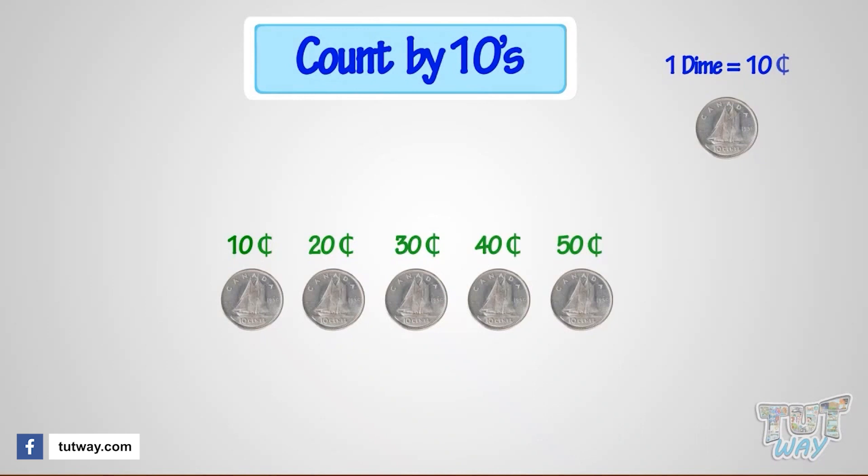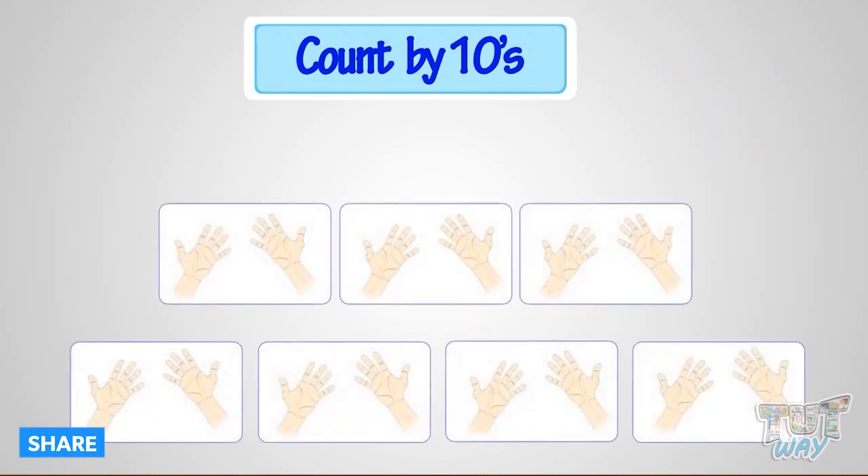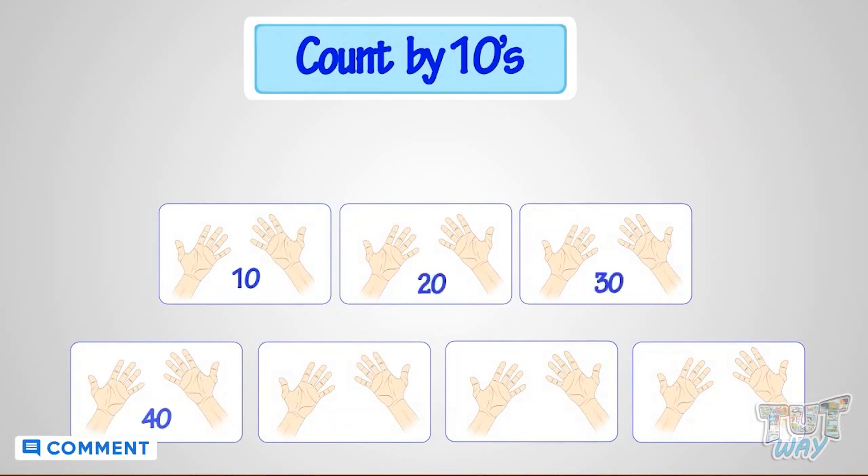These are fifty cents. So it's such a faster way to count. Let's take one more example. Count the fingers here. Ten, twenty, thirty, forty, fifty, sixty, seventy. So seventy fingers are there. It's so fast! Good!